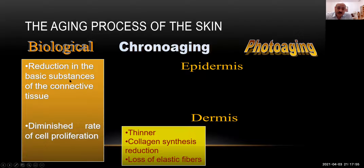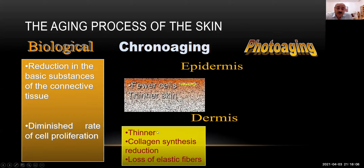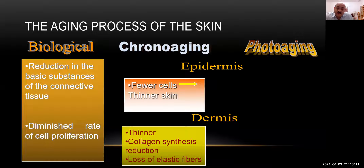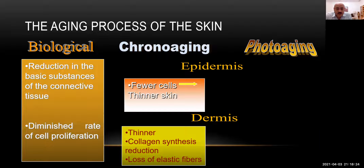With chrono aging, due to reduction in connective tissue substance, we see collagen loss and loss of elastic fibers in the dermis; and due to diminished cell proliferation, the dermis and epidermis become thinner. Think of our grandparents — very delicate, thin, atrophic skin. If there's one objective to treat chrono aging, it is stimulating collagen synthesis to regain firmness and thickness of the skin.